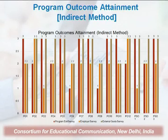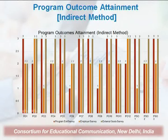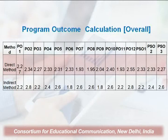These bar diagrams very clearly indicate the program outcome attainment under the indirect methods. You can see the program exit surveys, the external guide surveys, and so on. These kinds of bar diagrams, pie diagrams, and other charts are used so that it clearly exhibits the attainment level and how far the institution has progressed in uplifting quality standards in terms of program output and input mapping — that is, course outcomes and program outputs.